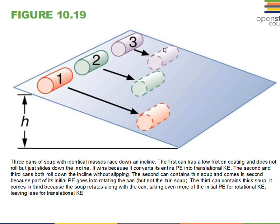For can number three, which is more solid, the contents spin as the can rolls down the plane. We have a supply of energy, mgh, and that mgh becomes one-half I omega squared — rotational kinetic energy — plus one-half mv squared. So the potential energy becomes both rotational and linear kinetic energy: mgh equals one-half I omega squared plus one-half mv squared. If the can has a significant value for I, the rotational energy is a larger number, leaving less energy for one-half mv squared, so the linear velocity v will be smaller. Your instructor may do a demo of this.